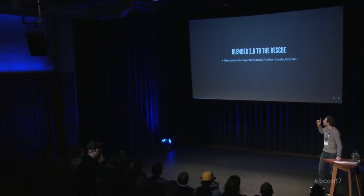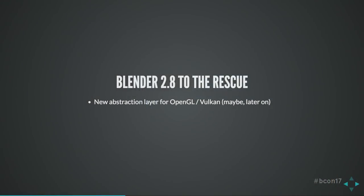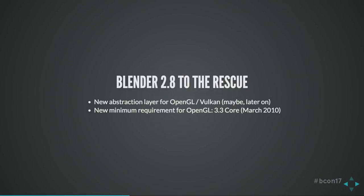Blender 2.8 is a perfect catch for that. With Blender 2.8 we said we can't rely on old technology — we have to remove things and add new stuff. There is a new abstraction layer coming for Blender 2.8, maybe eventually for Vulkan, which is on the future horizon. The abstraction layer is capable of drawing everything very fast. The new minimum requirement for OpenGL — which drives our graphics pipeline — is now 3.3 core, supported by all graphics cards that came out after March 2010.